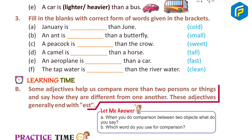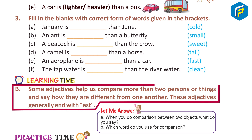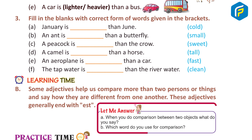Learning Time B. Some adjectives help us compare more than two persons or things and say how they are different from one another. These adjectives generally end with EST. Let me answer: A. When you do a comparison between two objects, what do you say? B. Which word do you use for comparison?